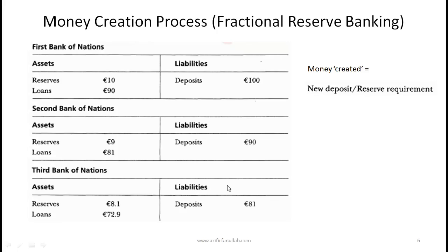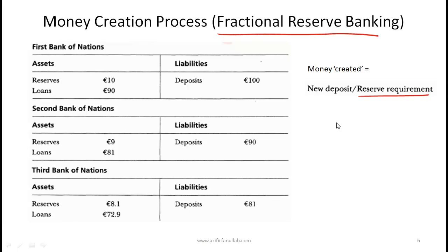Now let's introduce the concept of fractional reserve banking — this explains how money is created. The formula is: money created equals new deposits divided by the reserve requirement. The reserve requirement is the percentage of deposits that a bank must keep on hand. For example, with a 10% reserve requirement, if John Doe makes a $100 deposit, the bank must keep $10 and can loan out $90.